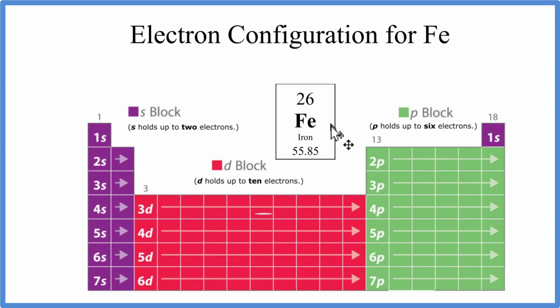That means it has 26 protons. And because it's a neutral element, it doesn't have a plus or a minus charge, the number of protons equals the number of electrons. So we have 26 electrons to write the electron configuration for Fe, iron.